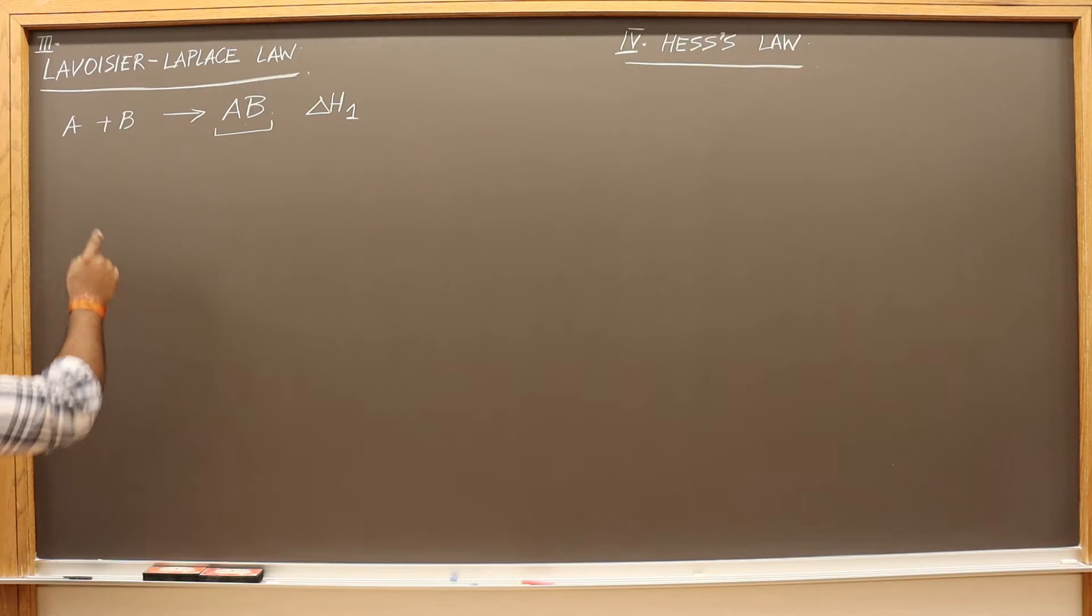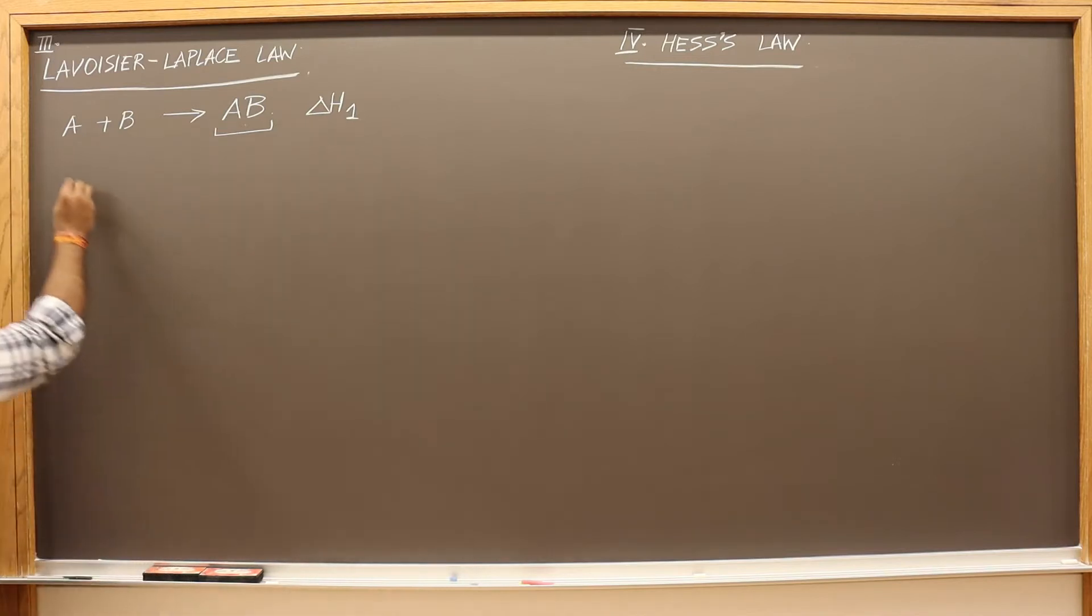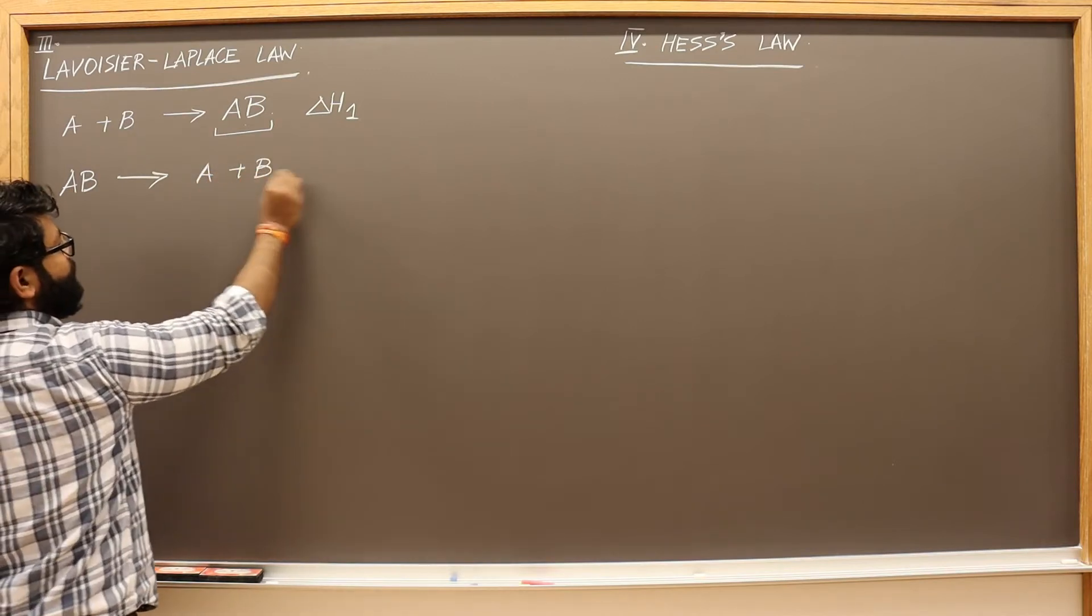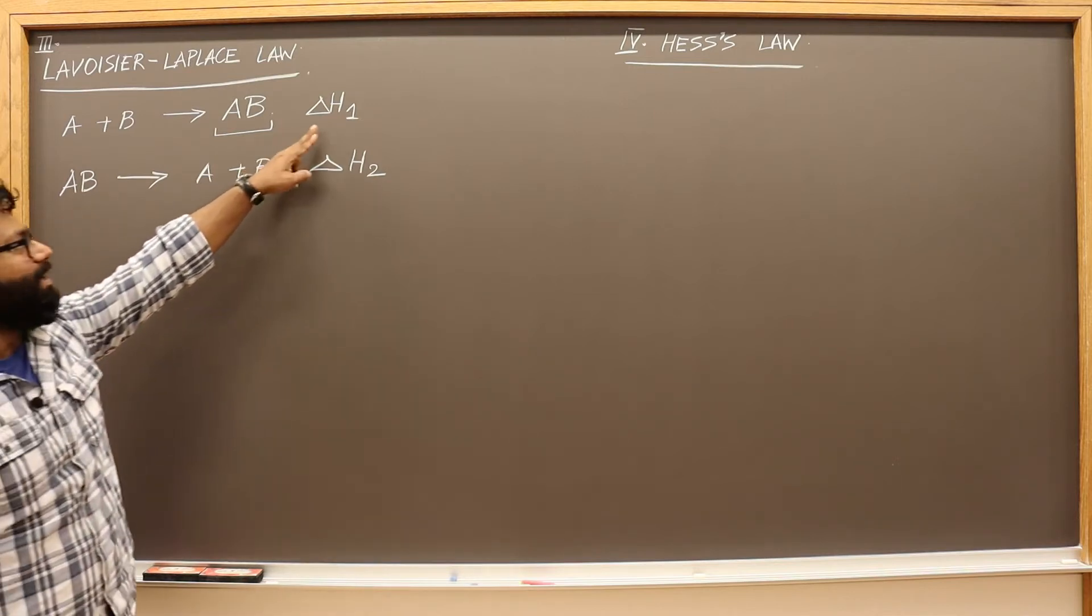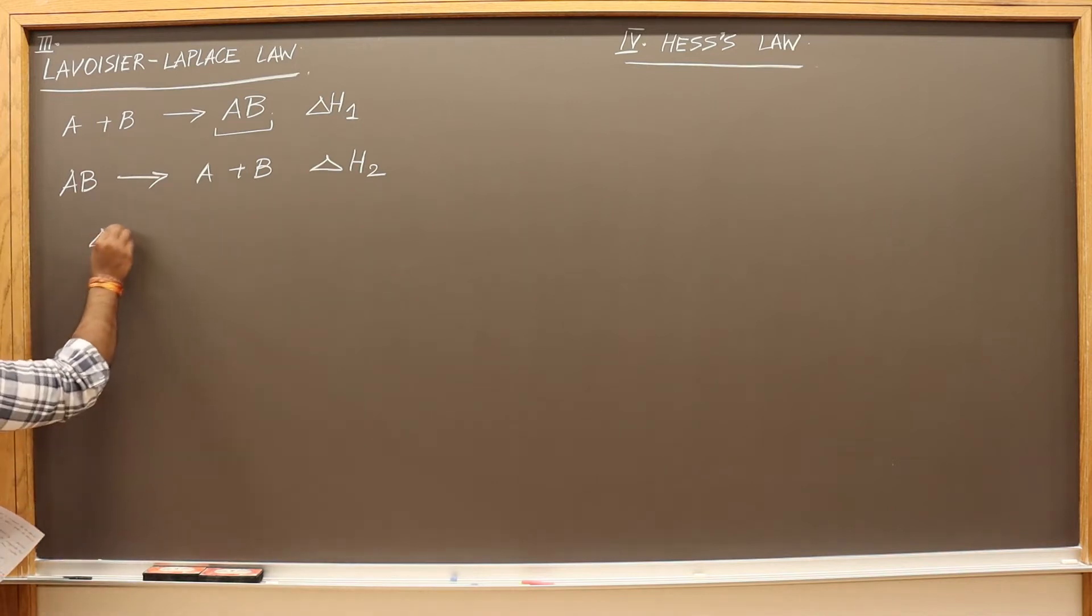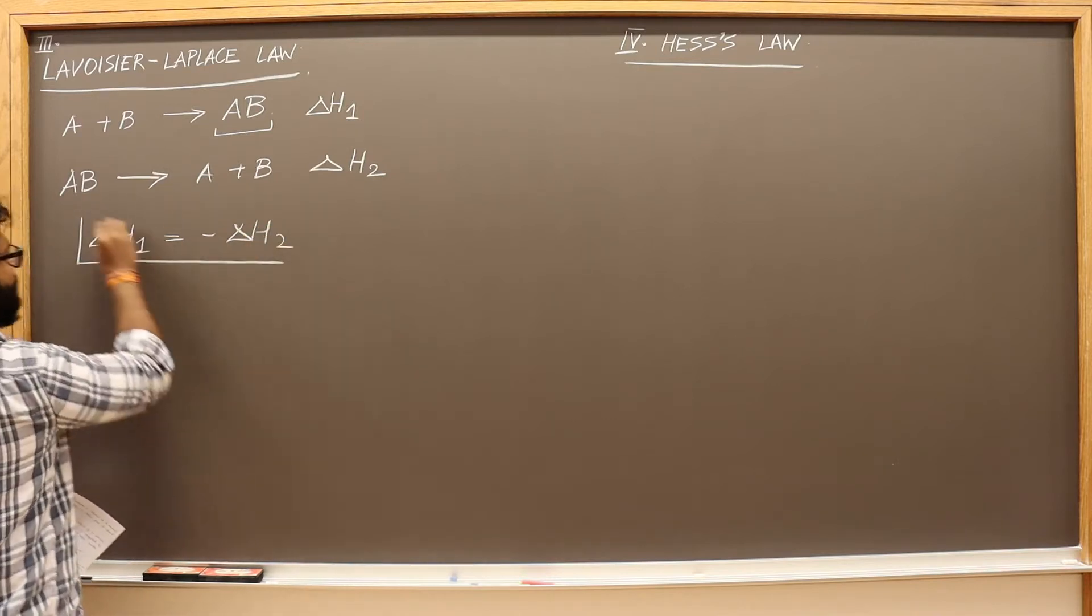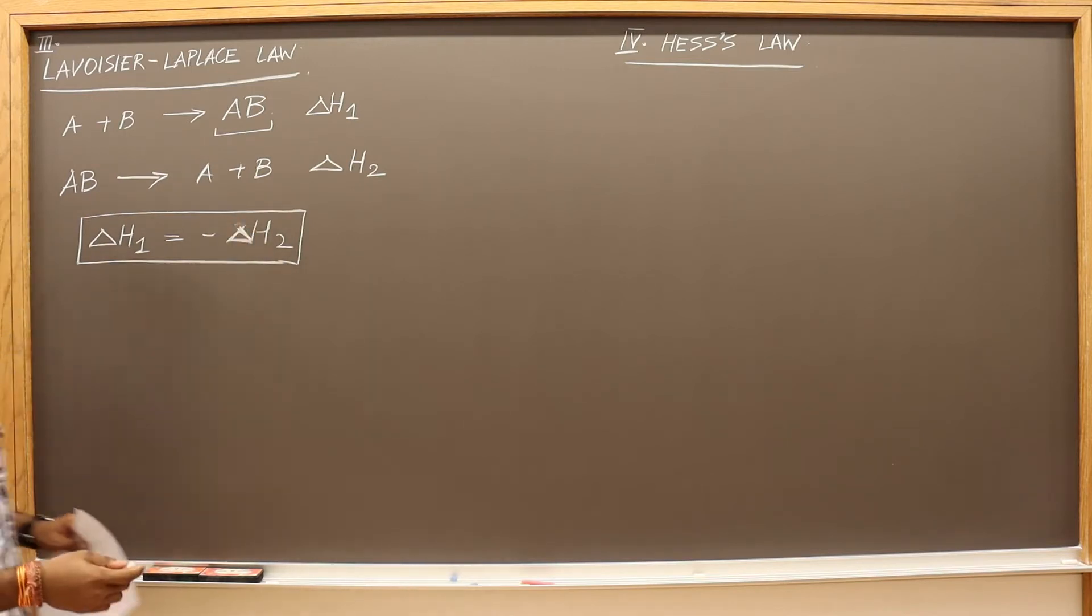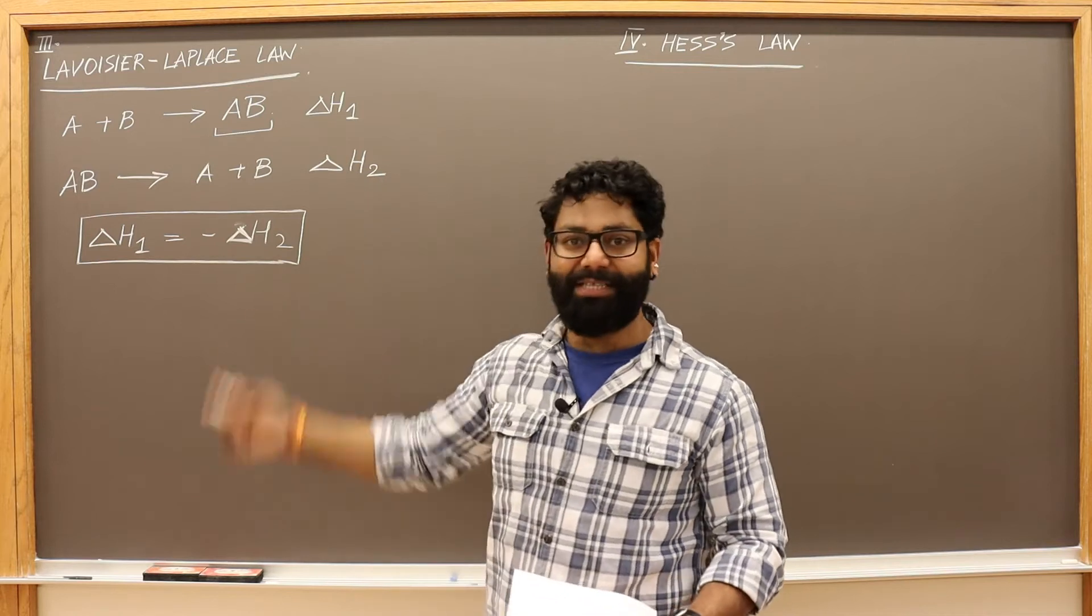According to Lavoisier-Laplace law, what this means is if the enthalpy change of this reaction A plus B gives AB is delta H1, the enthalpy of reaction of just the opposite—this was AB formation, this is AB dissociation into its constituents—then these two will have a relationship which is this.